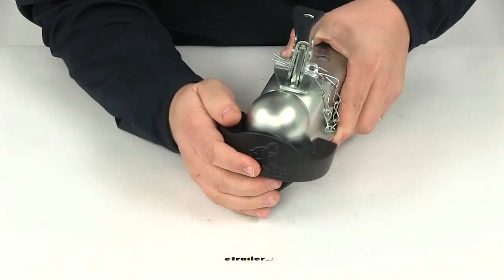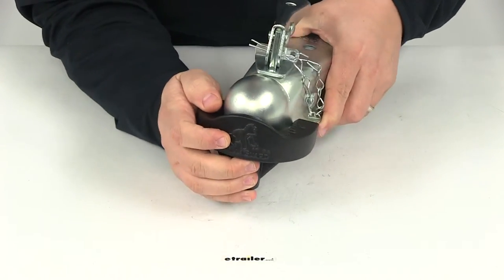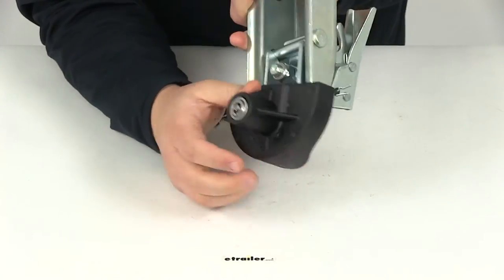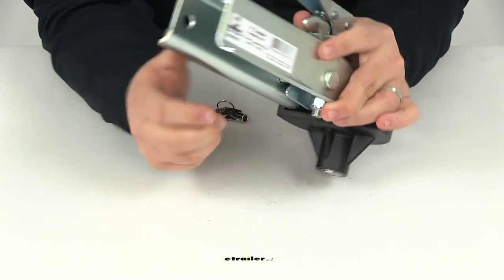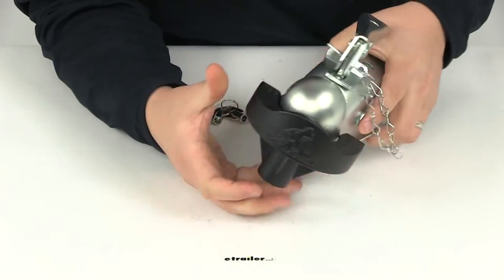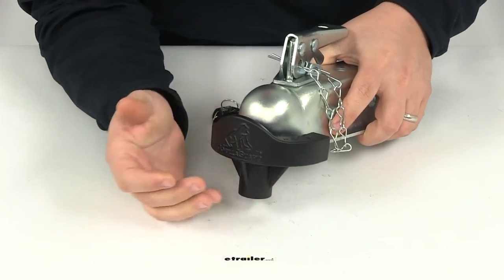Even though this swivels a little bit around that socket portion around the lip, it's still engaged with that pin here on the underside. So it's going to prevent the lock from being able to come off and prevent anybody from being able to hook up to our trailer.